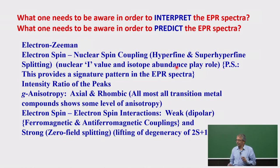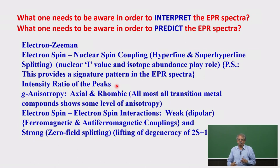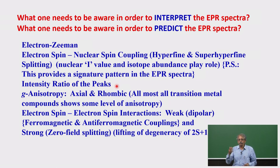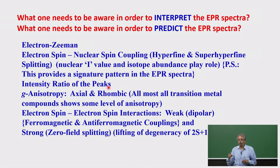Hyperfine and superhyperfine couplings give a signature pattern for EPR, as I explained in earlier classes. When you have n number of equivalent nuclei surrounding that unpaired electron spin density, the number of lines is given by 2nI + 1, where n is the number of equivalent nuclei and I is the spin of that type of nucleus. I have already given the intensity ratios: for n = 1 with I = ½ you get 2 lines; for n = 2, 3 lines; and so on.